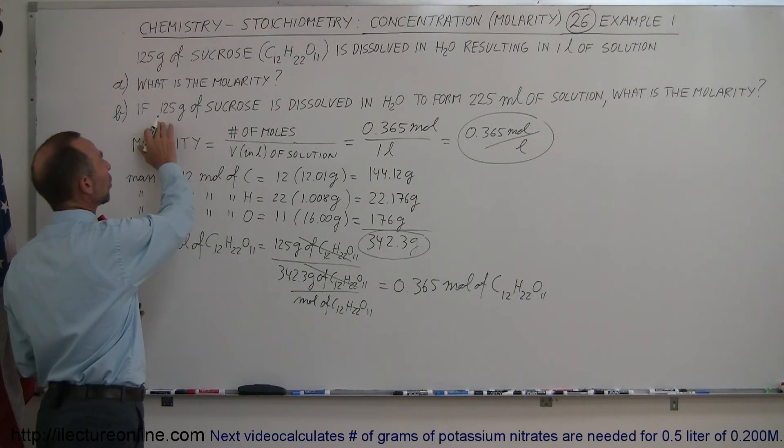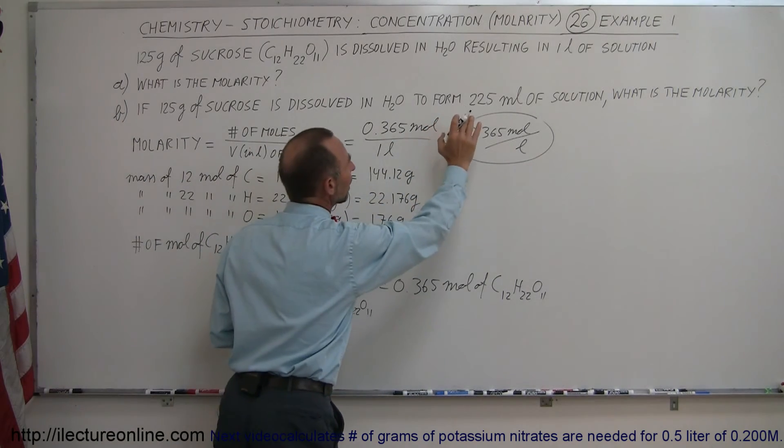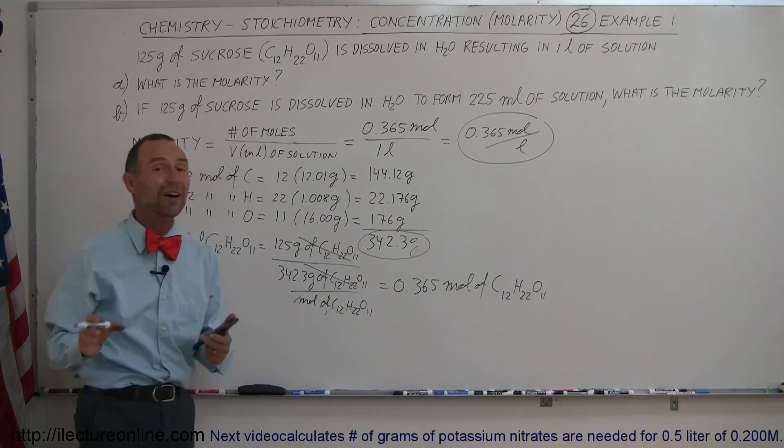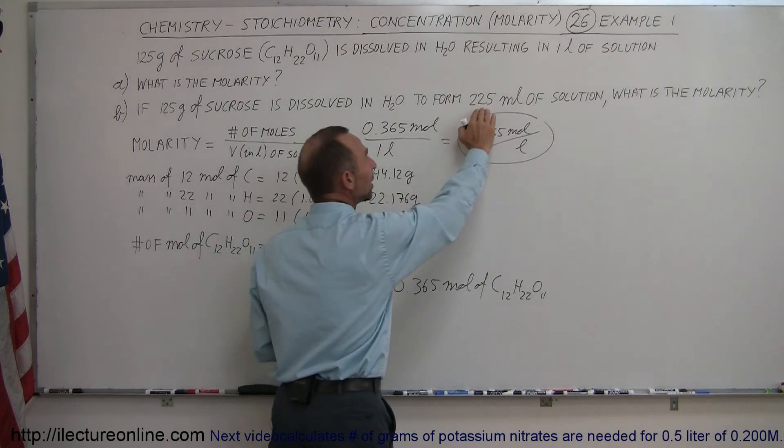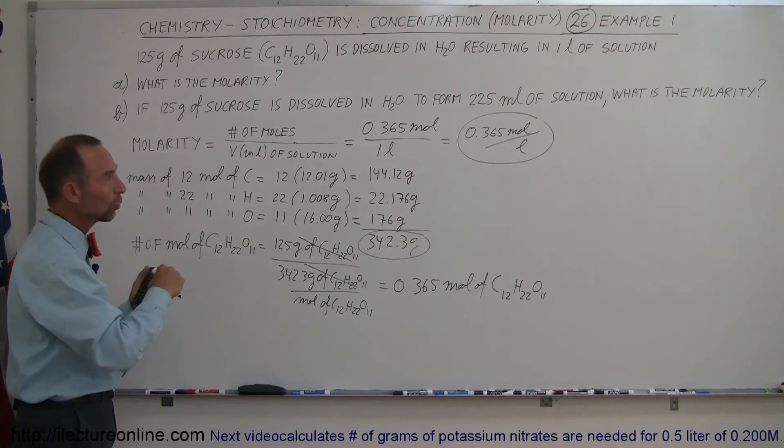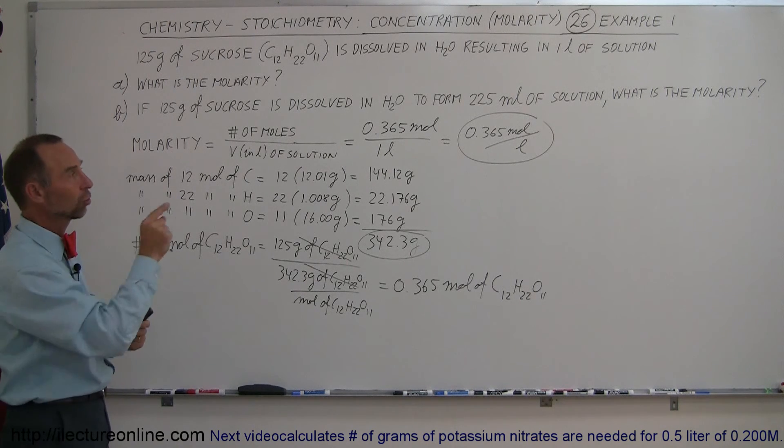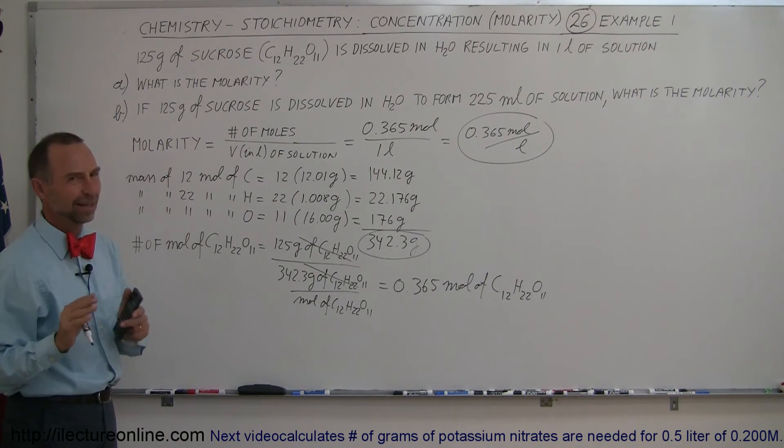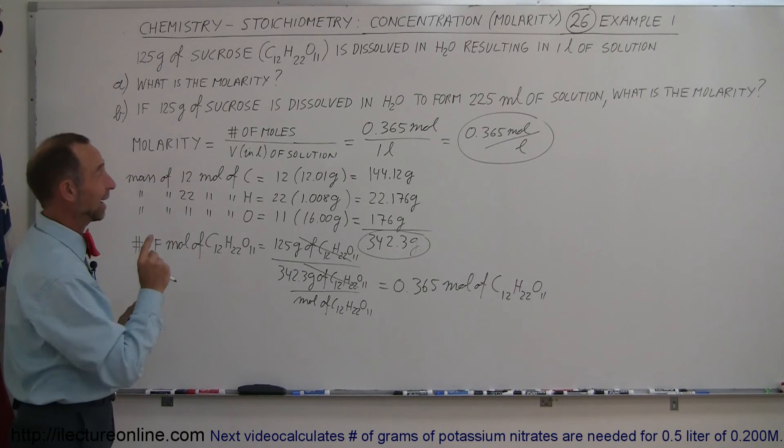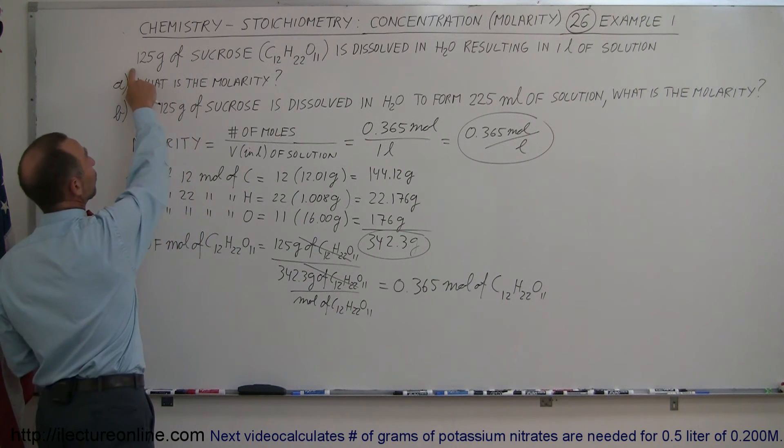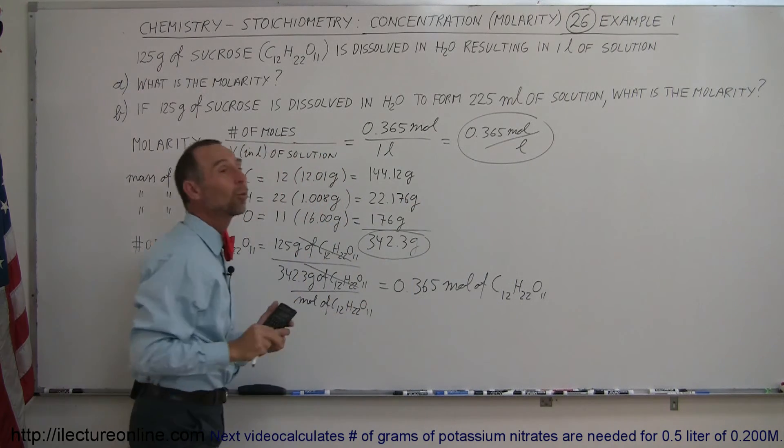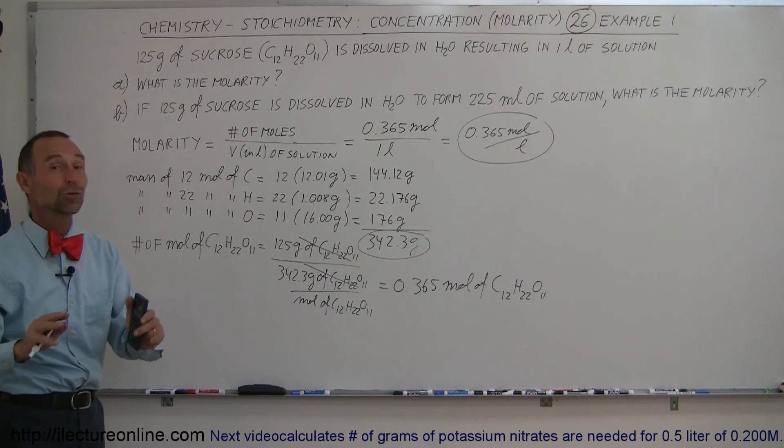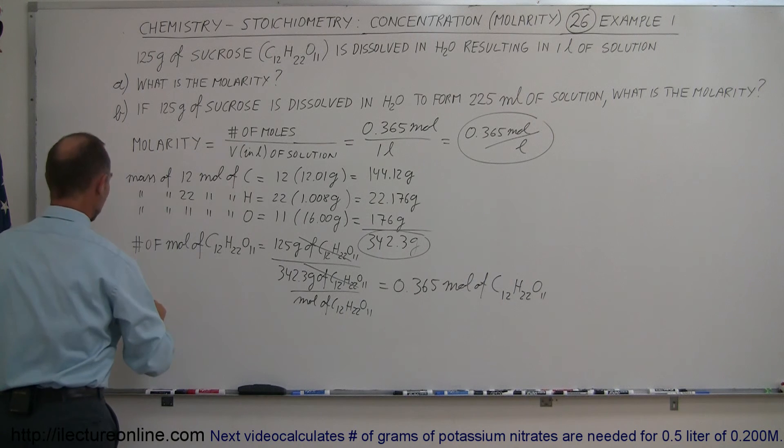But now, let's say we take the same amount of sucrose, and we dissolve it in only enough water to make 225 milliliters of solution. Remember again, we didn't add 225 milliliters of water, we add enough water, so that with the sucrose and the water together, you have a solution of 225 milliliters. Now in real life, tell a little secret, I don't think you're going to be able to dissolve 125 grams of sucrose in just this little amount of water. Probably not possible in the real world, but we're just doing it for the example.